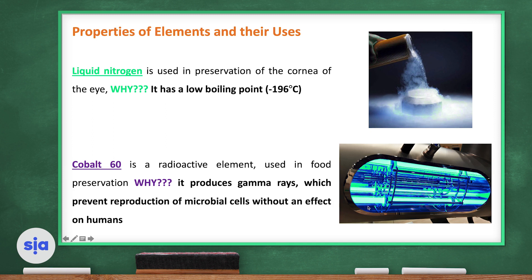Look at this apparatus or this device. It contains cobalt-60. It's a radioactive element used in food preservation. It produces gamma rays, which prevent reproduction of microbial cells without an effect on humans. And usually, cobalt-60 is used to preserve meat.